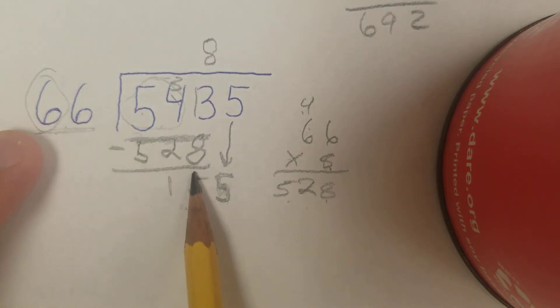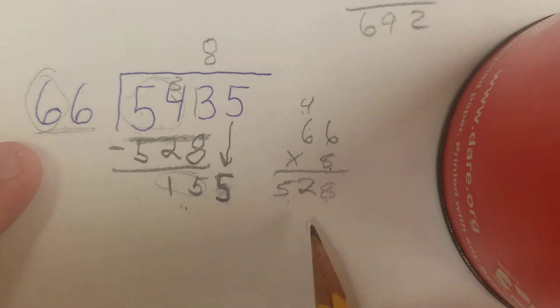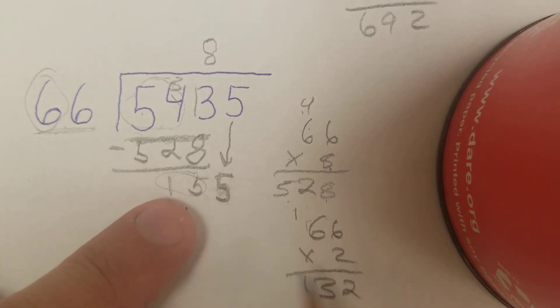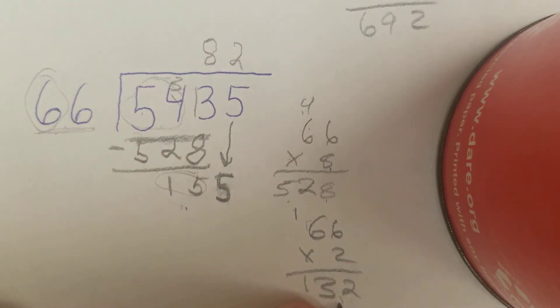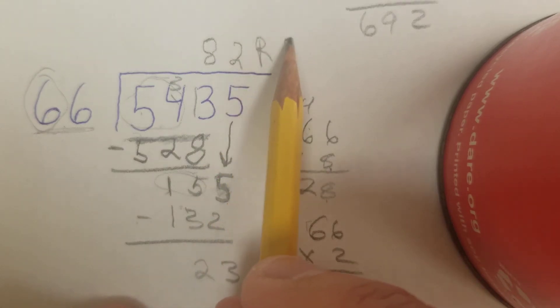I'm going to take my 6. How many times will it go into 15? I'm going to try twice. 66 times 2, 6 times 2 is 12, it's 132. So I'm going to use 2. 2 times 66 is 132. 5 minus 2 is 3. 5 minus 3 is 2. 1 minus 1 is 0. So I get an answer of 82 remainder 23.